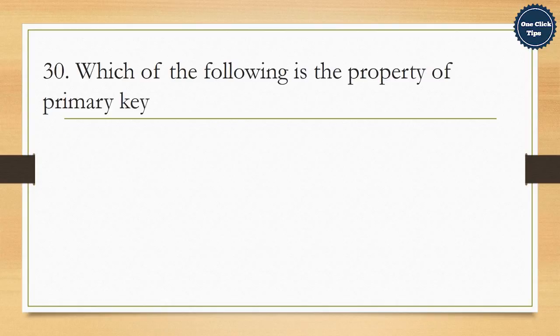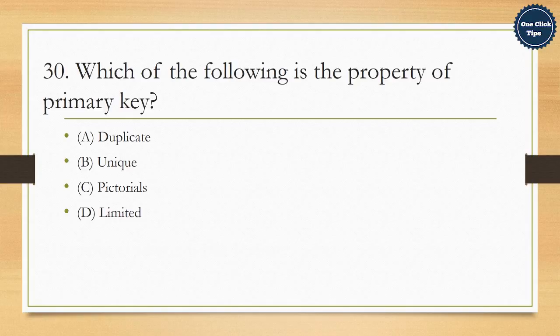30. Which of the following is the property of primary key? A. Duplicate, B. Unique, C. Pictorials, D. Limited. The correct answer is B. Unique.